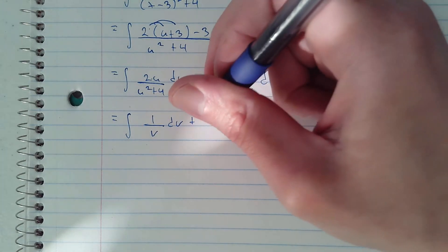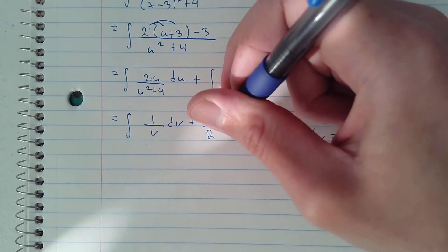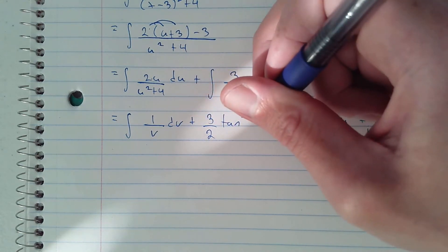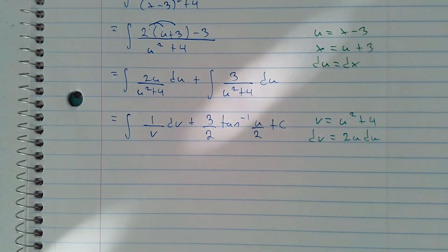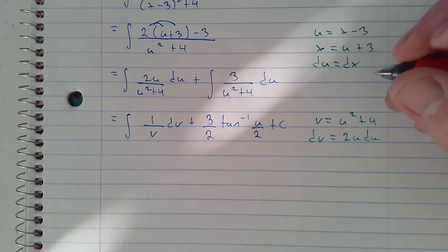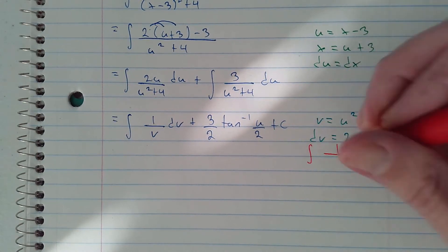And then we have 3 over 2 inverse tangent of u over 2 plus c. We'll use the integral that gives us inverse tangent.